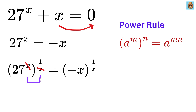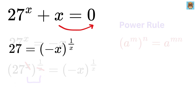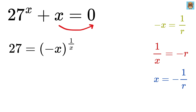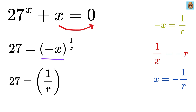So this will get cancelled out and it will become 27, and this equals minus x raised to 1 over x. Now, let us represent 1 over x as negative r. So we get x equals minus 1 over r, and negative x becomes 1 over r. Thus, this becomes (1 over r) whole raised to negative r equals 27.